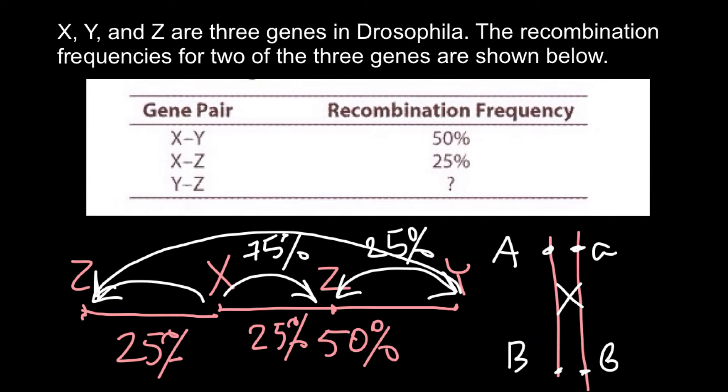But what would happen if we would have two crossing overs here? We would return to our initial state. First we would have recombination, but second recombination, second crossing over would return alleles in the original positions.